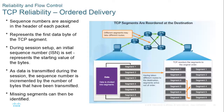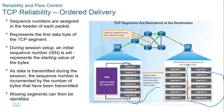TCP reliability delivers ordered data by establishing initial sequence and acknowledgement numbers that both sides agree on. In the graphic, data is divided into six segments; because they travel through different routes, they arrive out of order — but TCP automatically uses sequence and acknowledgement numbers to put them back in the right order, restoring an exact copy of the original data. If a segment is never received, it will be retransmitted.